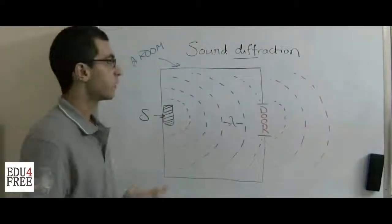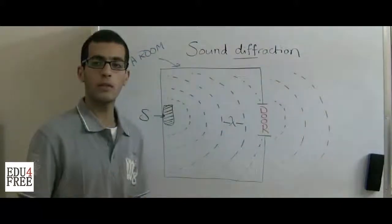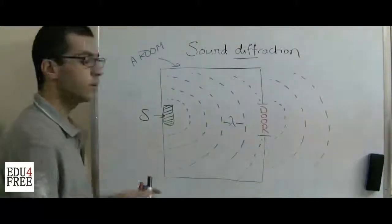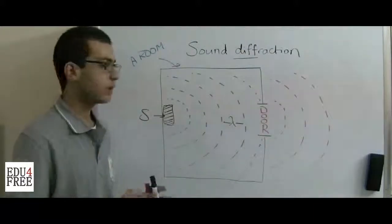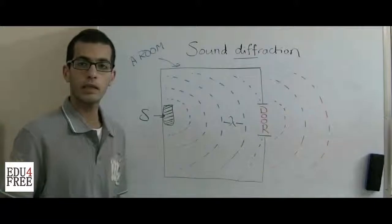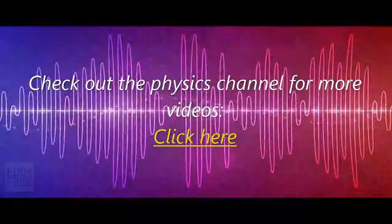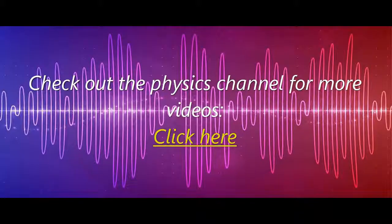So now we know all the properties of sound like sound reflection, refraction, the interference of sound waves, and sound diffraction. And from all of these we can conclude the properties of sound as a wave. So that's what we will learn in the next video. And until then, I thank you for watching and see you soon.